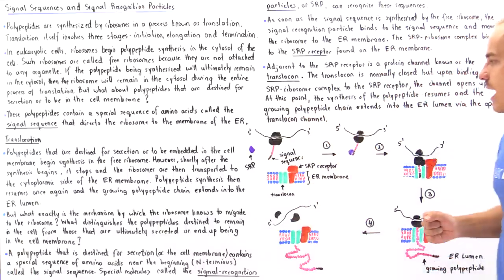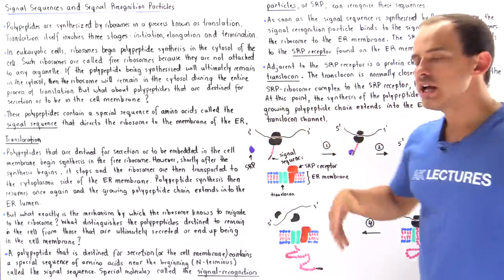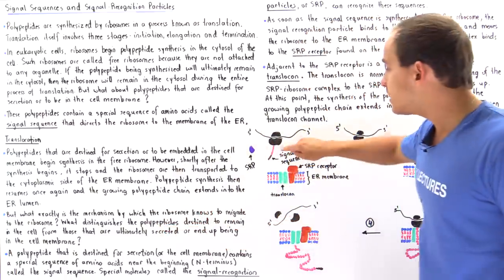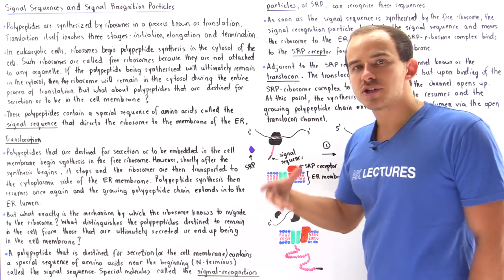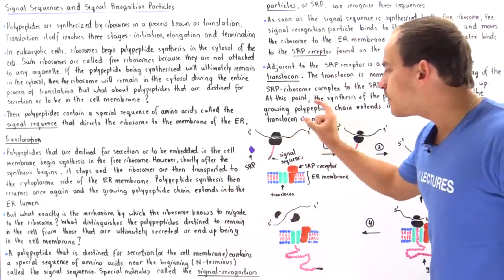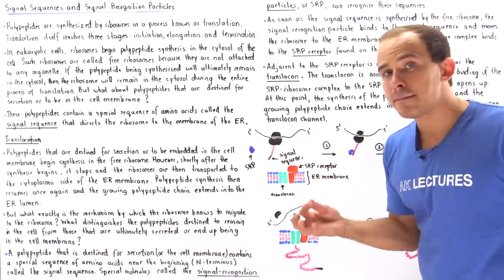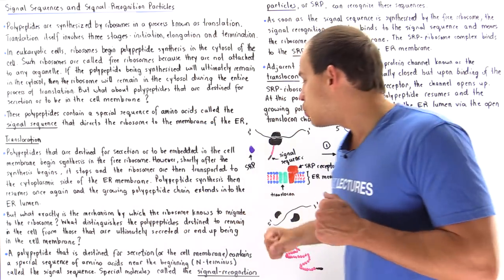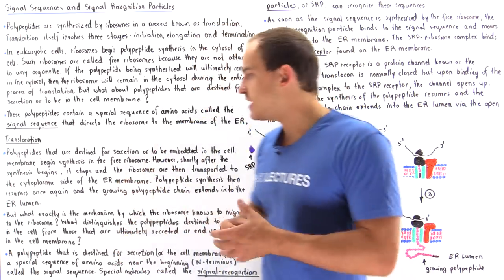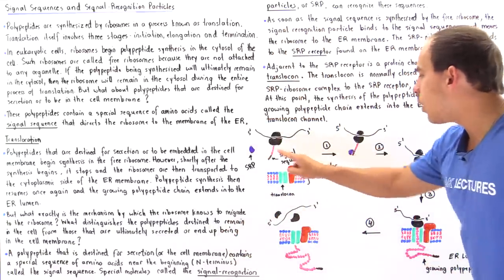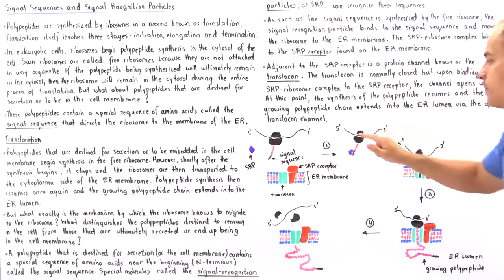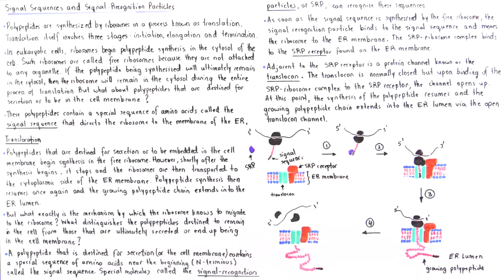Looking at the diagram, the mRNA molecule is being read by the ribosome, which is producing the polypeptide chain. The signal sequence is a special sequence of amino acids found at the N-terminus of the polypeptide chain. If the polypeptide chain contains the signal sequence, a special complex of molecules known as signal recognition particles, or SRP — a complex of RNA and protein molecules — will bind onto the signal sequence and transport the entire SRP-ribosome complex onto the membrane of the endoplasmic reticulum.